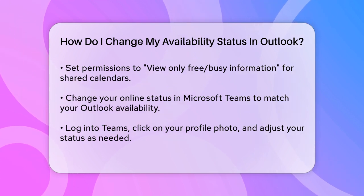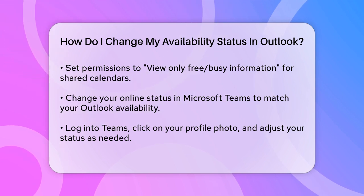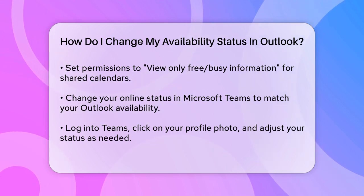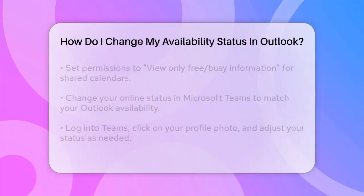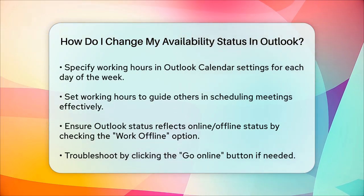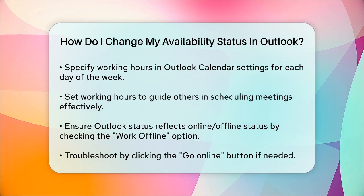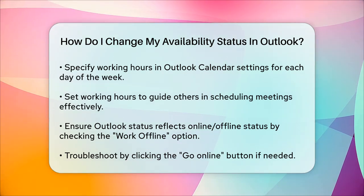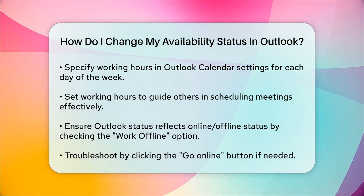For those who need to specify their working hours, Outlook allows you to set these hours for each day of the week. Go to the settings in Outlook Calendar, and under Calendar, you can set your working hours. For example, you can set Thursday from 12 p.m. to 8 p.m. and Friday from 8 a.m. to 4 p.m. This helps others know when you are available for meetings and ensures that the scheduling assistant suggests times within your working hours.